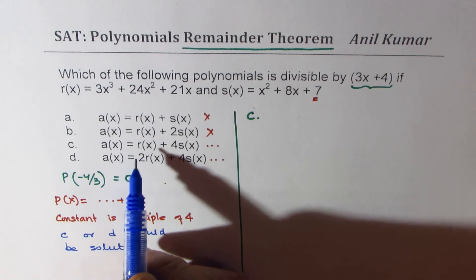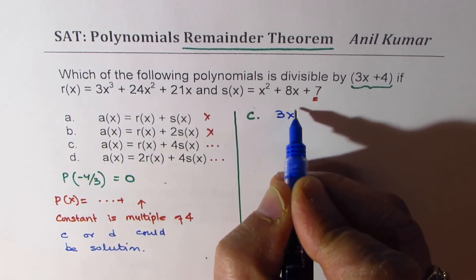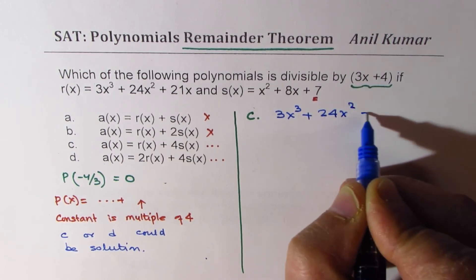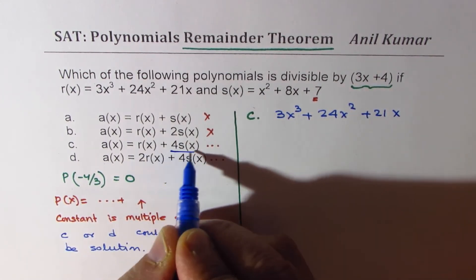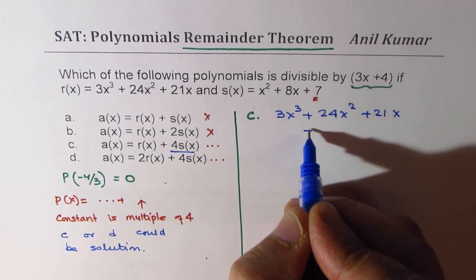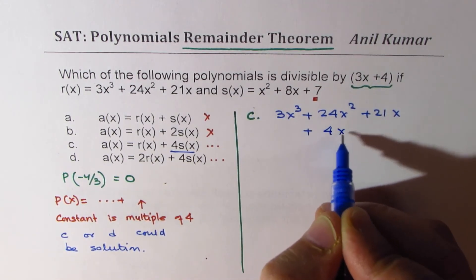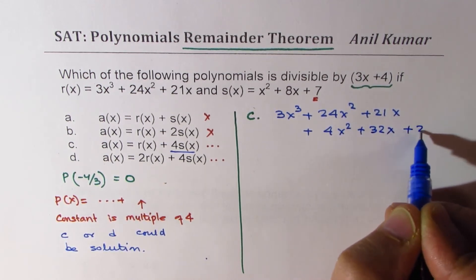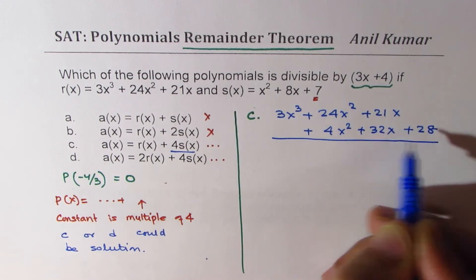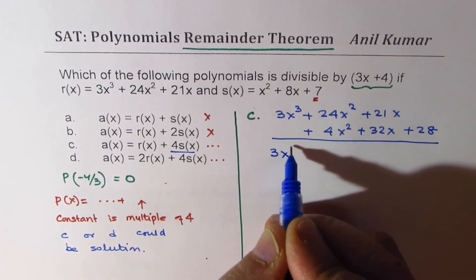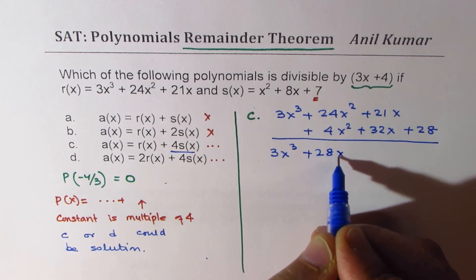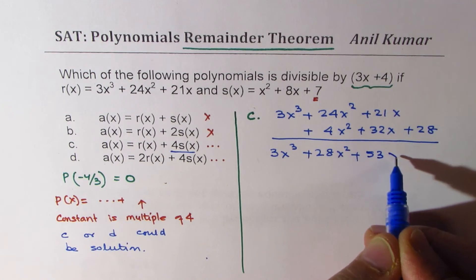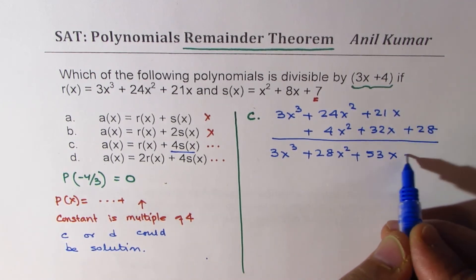So if you try c, what we are writing here is r(x) which is 3x³ plus 24x² plus 21x plus 4 of s(x). Let's write here, 4 of this means 4x² plus 32x plus 28. And when you add them, what do you get? You get 3x³ plus 28x² plus 53x plus 28.